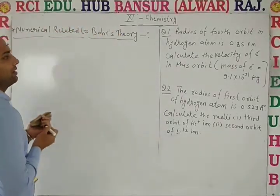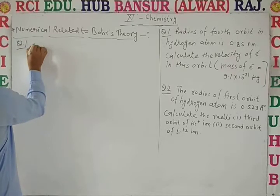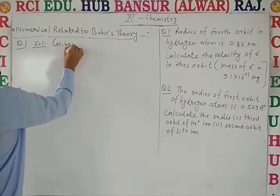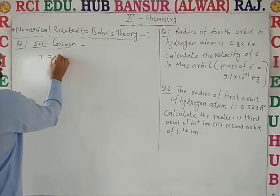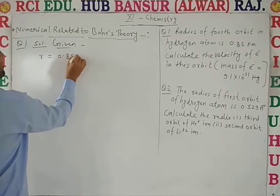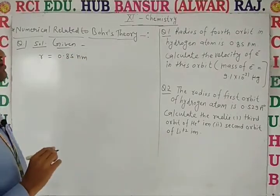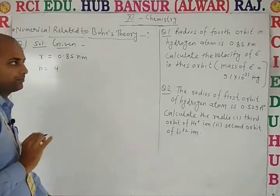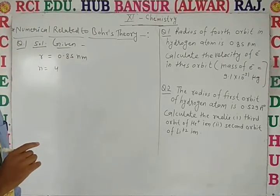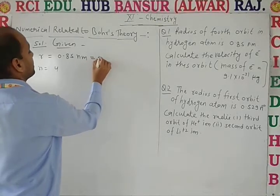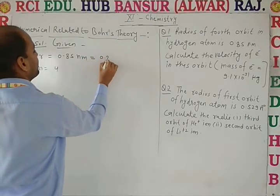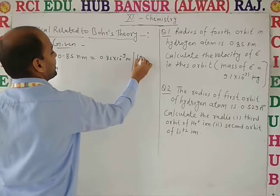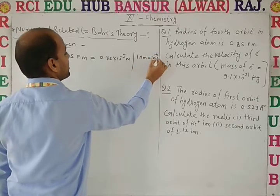The radius of the fourth orbit in hydrogen atom is given. So here the given value is r = 0.85 nanometers. The radius of the fourth orbit — n = 4 — in hydrogen atom is 0.85 nanometer. We need to convert nanometers: 0.85 nm = 0.85 × 10⁻⁹ meters, because 1 nanometer = 10⁻⁹ meters.